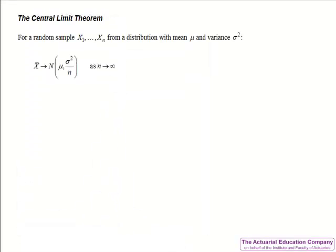Let's state this more formally. Suppose we have a random sample x1 to xn from a distribution which has mean mu and variance sigma squared. Then the distribution of the sample mean becomes closer and closer to a normal distribution with mean mu and variance sigma squared over n as the sample size becomes larger. Note that we are using capital X-bar as we are talking about the distribution of all the sample means rather than one particular value.